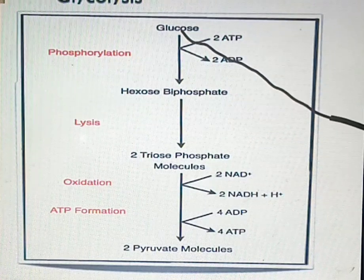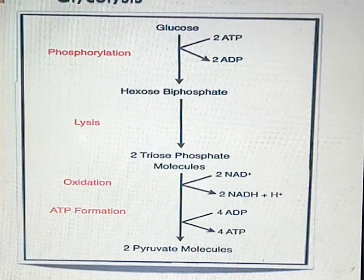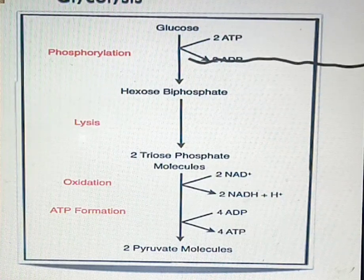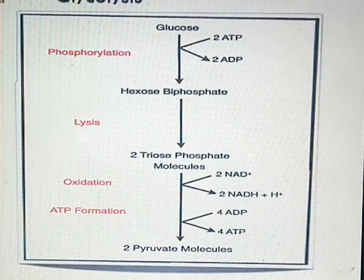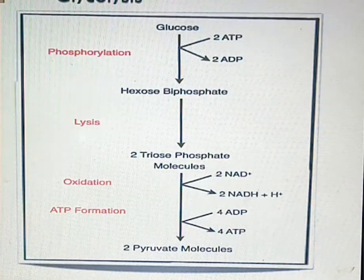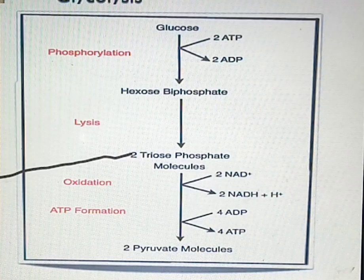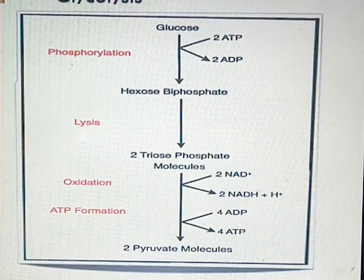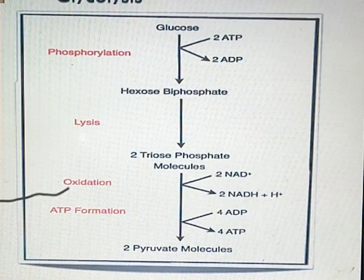The purpose of phosphorylation is to activate glucose so it can generate ATP for the cell. Two molecules of ATP are added to glucose to give you fructose-1,6-bisphosphate. This then undergoes lysis — that is, splitting into two — to give you two molecules of triose phosphate, also referred to as G3P, which stands for glyceraldehyde-3-phosphate.